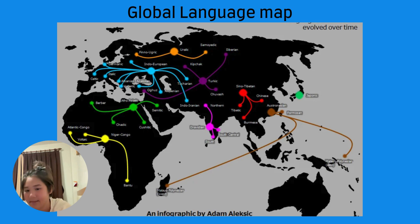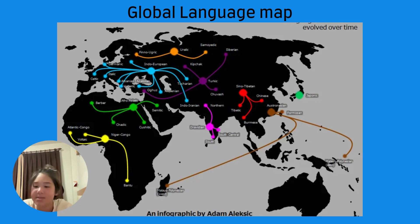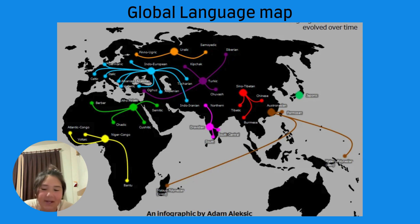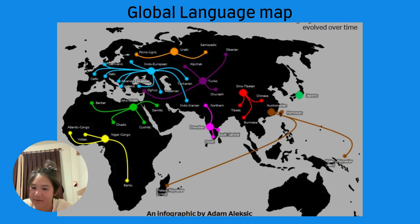So there you have it — the history of languages: born out of necessity, spread through war and colonization, and now living in a world where Duolingo reminds you to learn French or it'll haunt you in your dreams. Languages live, languages die, and sometimes they mutate into something new, like Spanglish or Franglais — part of the grand human experiment where no one really knows what anyone's saying anymore, but we're all trying our best. Languages have survived wars, invasions, and empires collapsing, so if you mispronounce 'boisson' in French, it's probably not the end of the world.